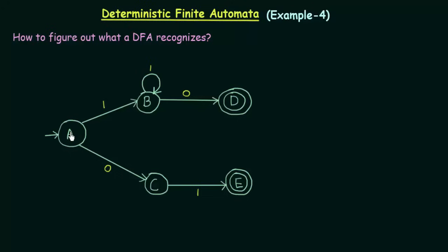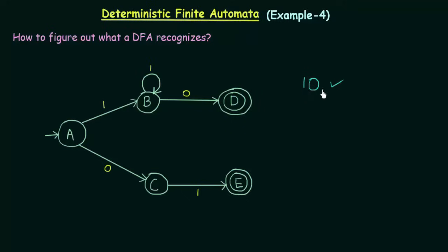First we are in state A and on getting input 1 it goes to state B. So we get an input 1 and it goes to state B. In state B it could either get input 1 or 0, and if it gets input 0 it directly goes to D, which is a final state. D has a double circle which shows it is a final state. So the string '10' is accepted.